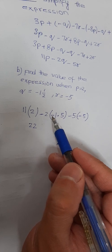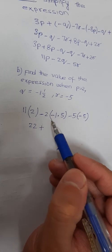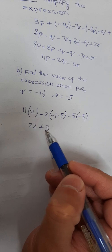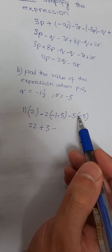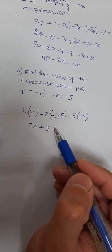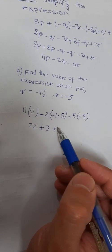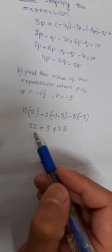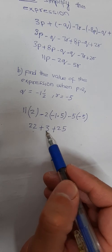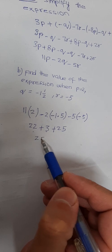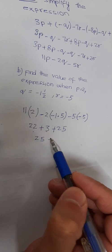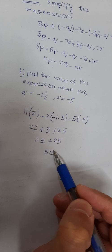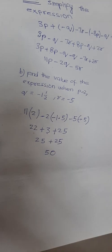Minus multiplied by minus is plus: 1.5 into 2 is 3. Minus into minus is plus: 5 into 5 is 25. So 22 plus 3 is 25, plus 25, giving the answer 50. The value of this expression is 50.